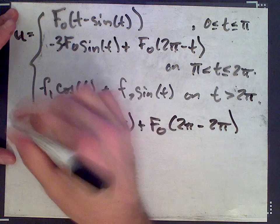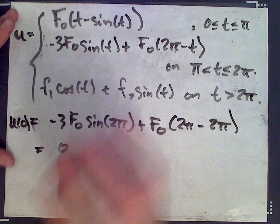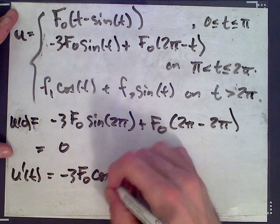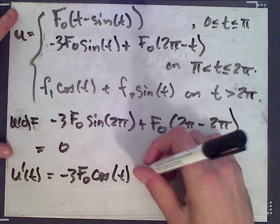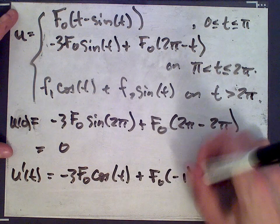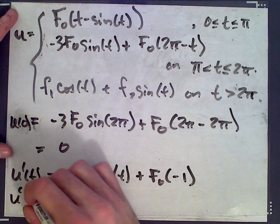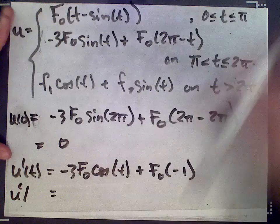So this is u of 0 is negative 3 f0 cos t plus f0 times negative 1, and so u prime at... sorry, back up.